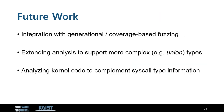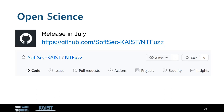We believe there are several promising directions for future work. First, we can integrate the syscall type information with generational or coverage-based fuzzing as well. Also, we can extend our static analysis to support more complex types like union. Lastly, in this work we only analyzed user-level code, but we can further complement the type information by analyzing kernel code as well. To support open science, we will release the source code of NT-Fuzz on GitHub in July. If you are interested, please click the stars and watch our repository for updates.